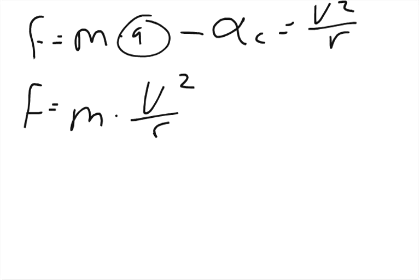All you've got to do is plug in the numbers. So 55 kilograms times the velocity 4.03 squared, and divided by the radius, which is 0.805 meters.